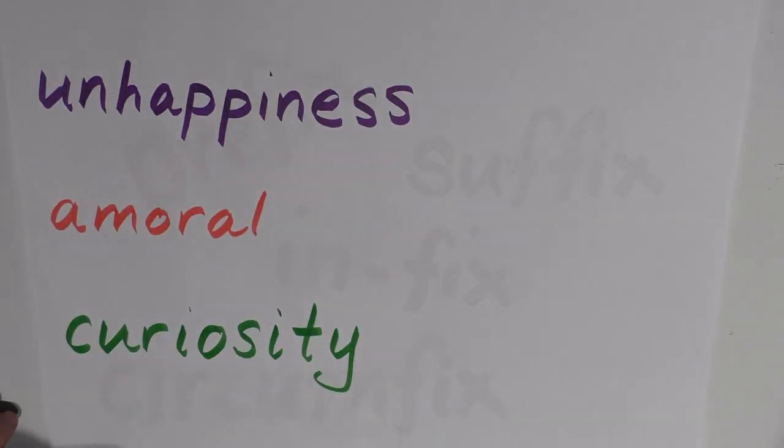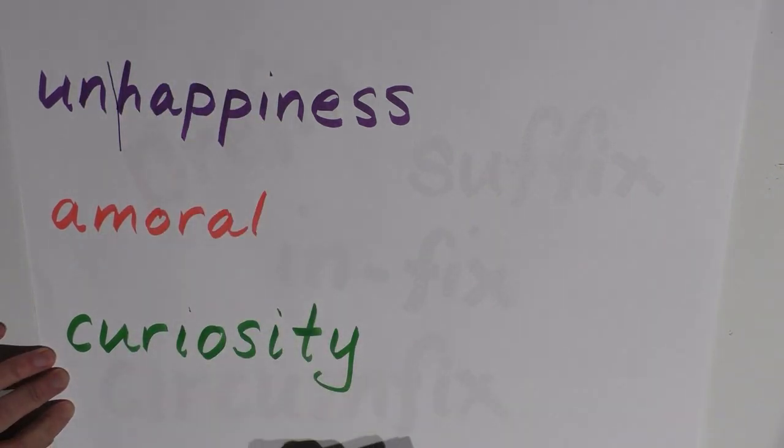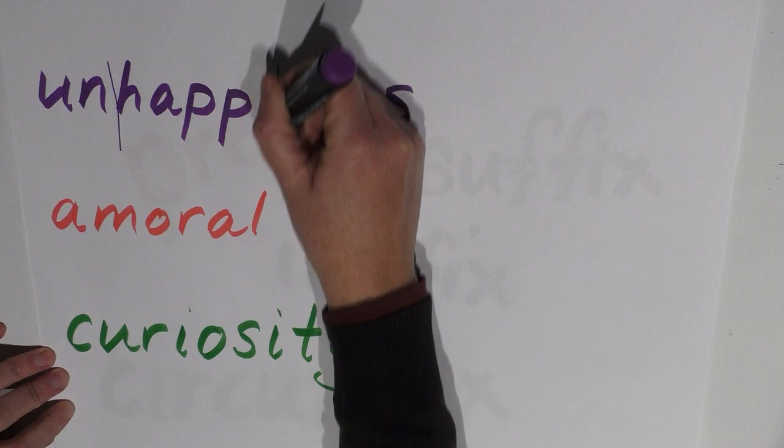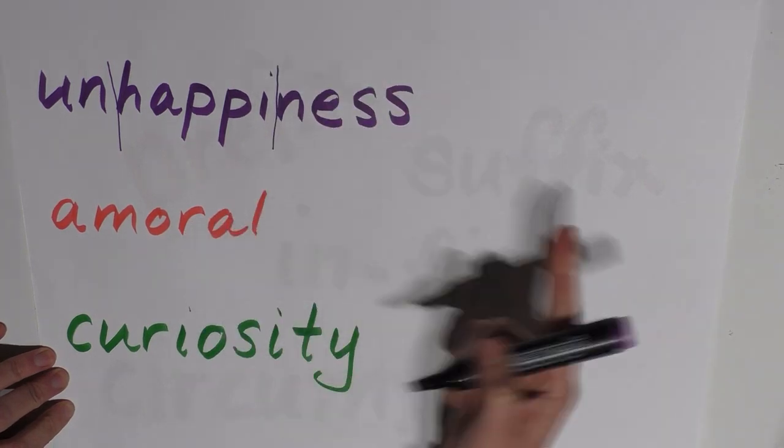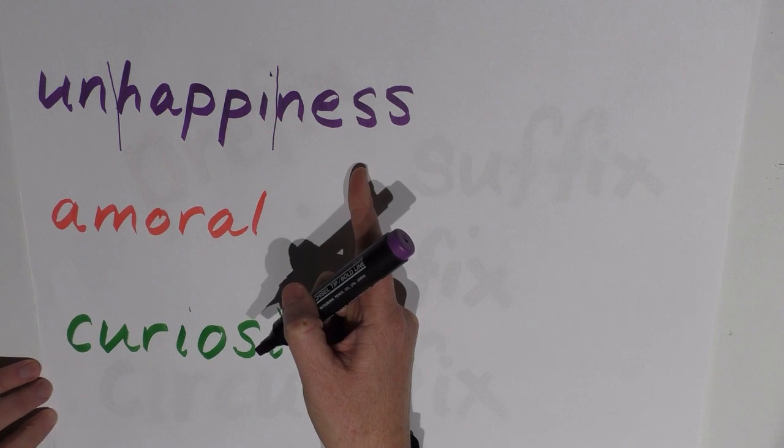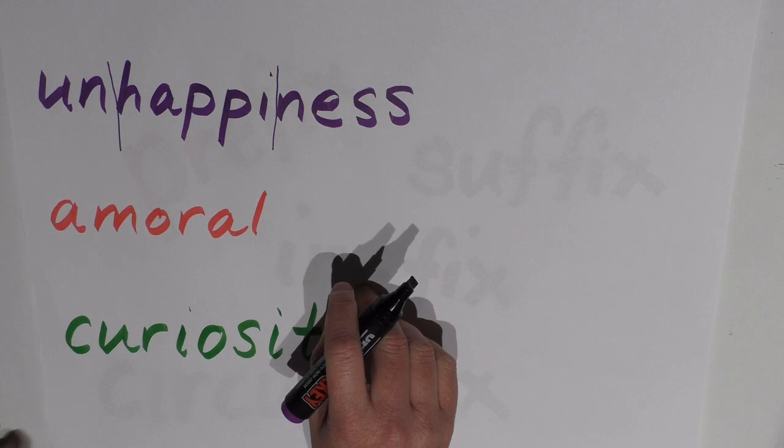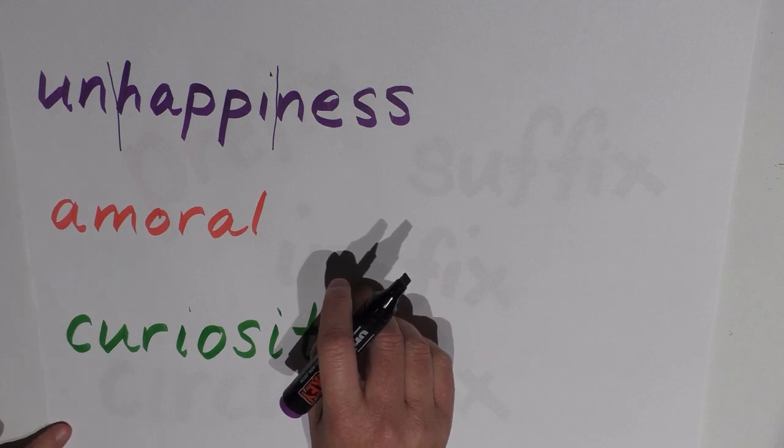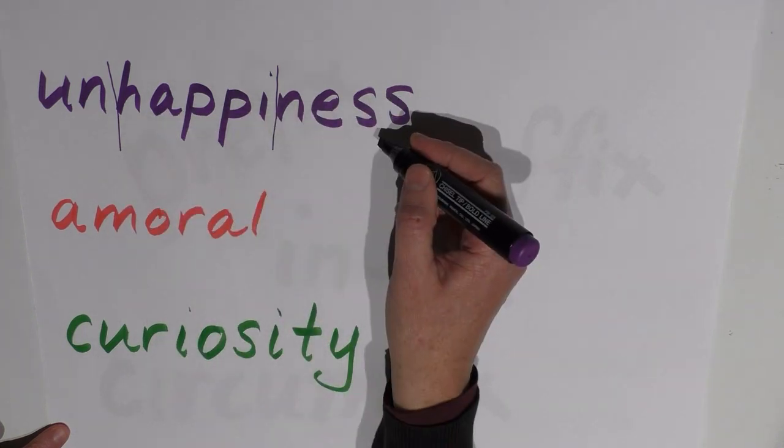Our first word is 'unhappiness.' Let's first break up unhappiness into the different morphemes. We have 'un,' we have 'happy.' You'll notice there's an 'i' in happy instead of a 'y,' and of course sometimes when we add an affix or a bound morpheme onto a free morpheme we do have to alter the spelling to accommodate that. But still, 'happy' is the free morpheme. And then we have 'ness.' So there are three morphemes in this.